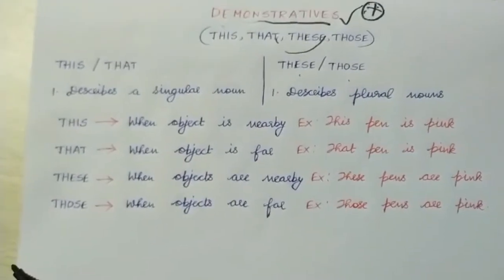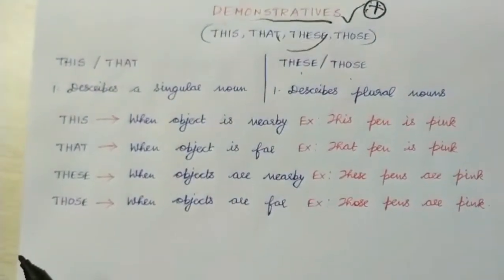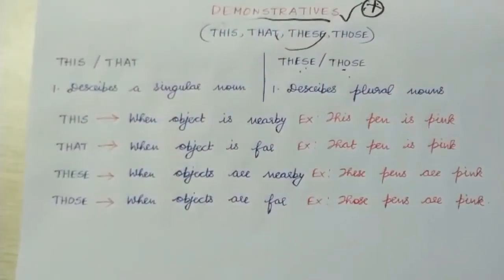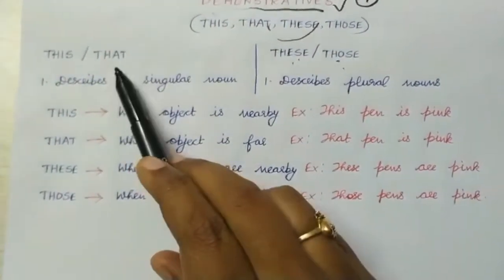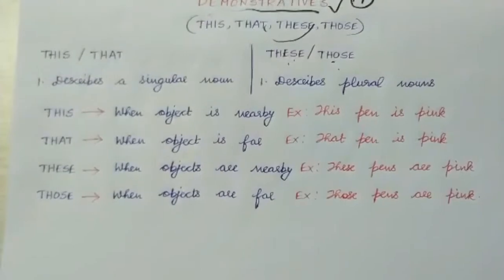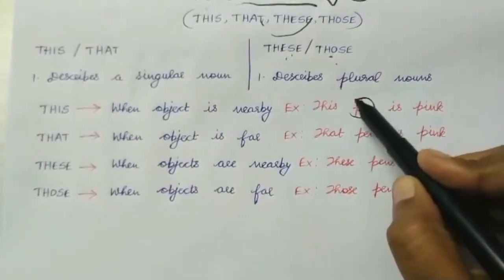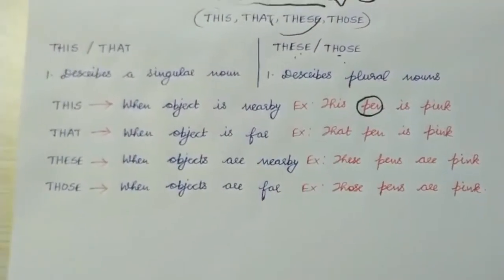Okay, so what are the plural demonstratives? These and those. What about singular demonstratives? This and that. Now you see, I have given four examples all with the same sentence. I am going to explain the difference very clearly.